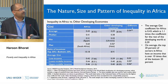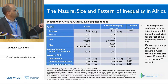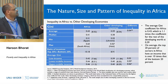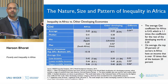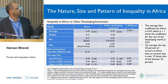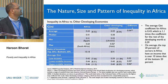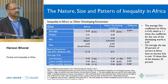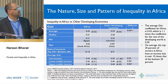We took the PovCalNet data and looked at the average Gini coefficient for Africa. We came up with an average Gini of about 0.43. When we looked at other developing countries the average Gini was 0.39 — statistically significant difference. We also took the ratio of the top 20% to the bottom 20%, and that ratio was 10 to 1 in the case of Sub-Saharan Africa, and just under 9 for the rest of the developing world.